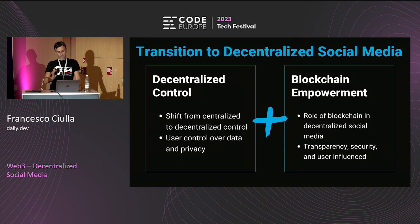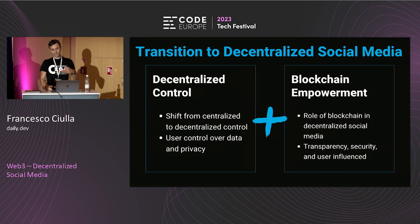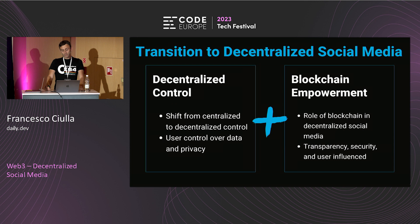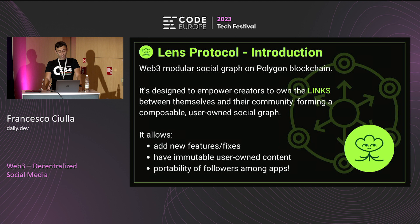What we should have is more decentralized control — shifting from something owned only by the application to something more community-owned, centered on the creators. We should have more user control over data. Can blockchain play an important role in this? I think yes, because by architecture blockchain can help by giving more transparency, being more distributed through consensus, and being more focused on individual users.